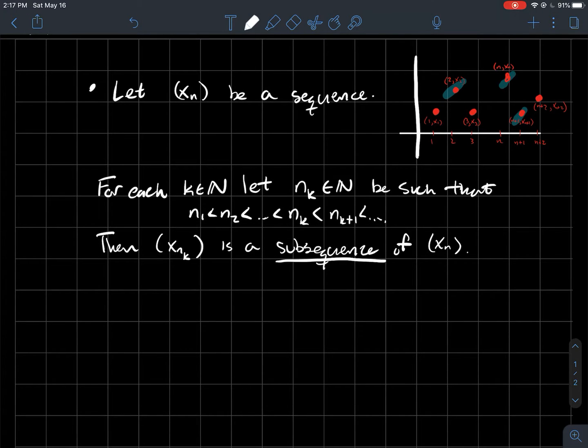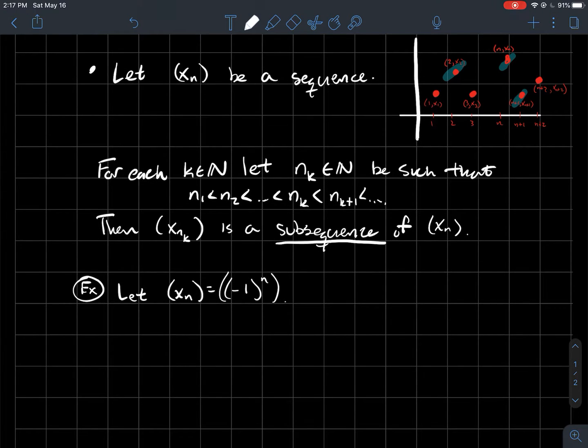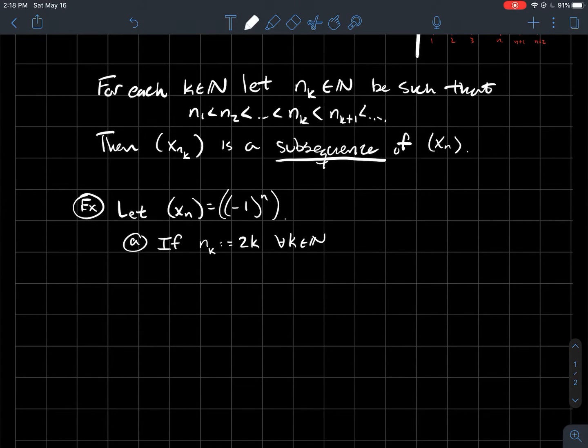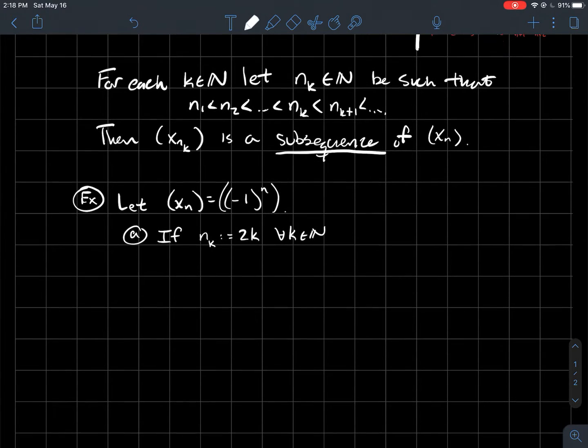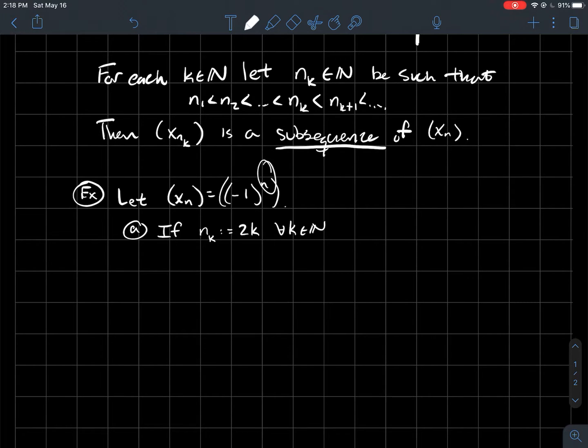So let's look at a couple examples. Well, just let's do one example. So let's say xn is a sequence that says minus one to the nth power for each natural number n. So one subsequence you could make is, what if I just said nk is 2k? So in other words, what if I just always made this exponent even? That's what this is trying to say. Then that's a subsequence that's just always one.